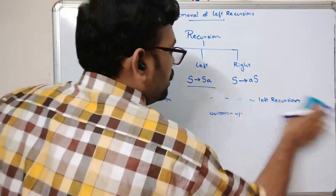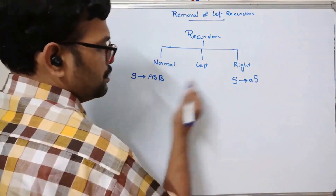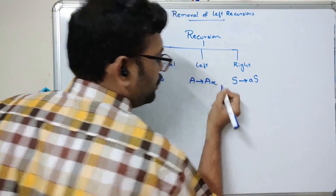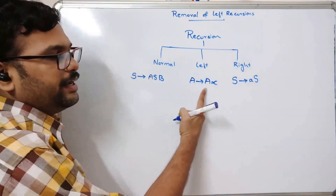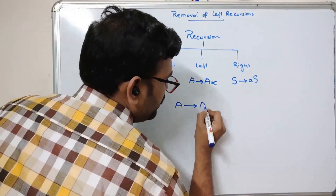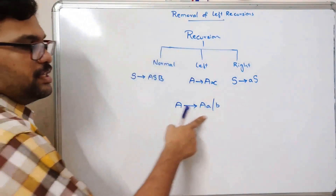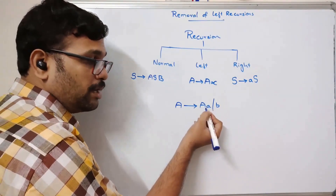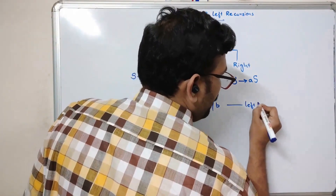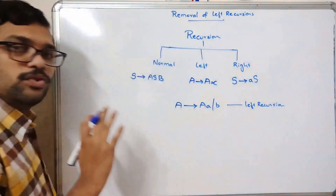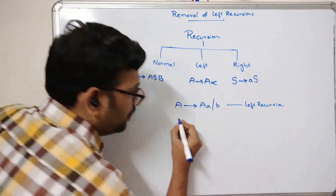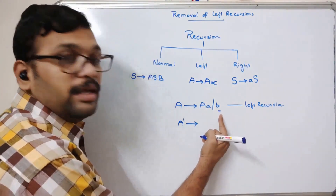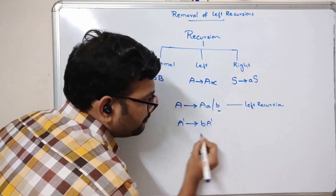Now we'll see the procedure to remove left recursion. If the left recursion is in the form A → Aα | β, we create a new non-terminal A'. The production A → Aα | β becomes A → βA'. For example, if A → Aα | b, we write A → bA'.